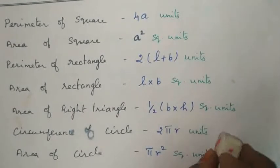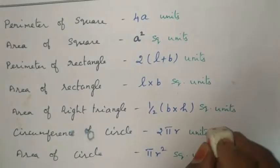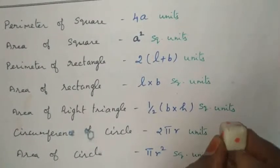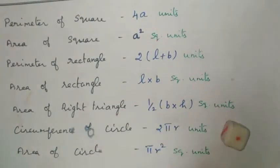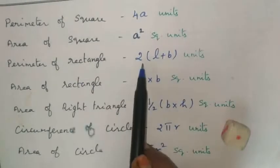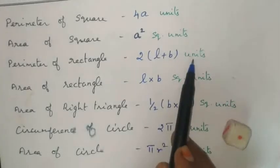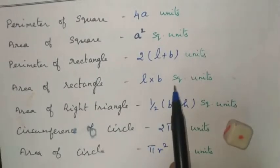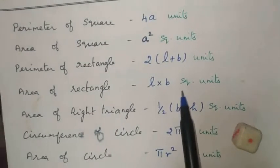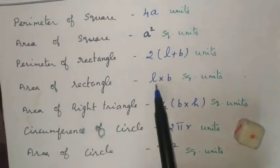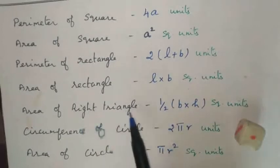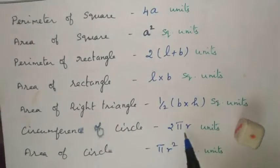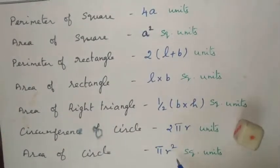The perimeter of a rectangle is 2 into (l + b) square units. The area of a rectangle is l into b square units. The area of a right triangle is half into b times h. The circumference of a circle is 2πr. The area of a circle is πr² square units.